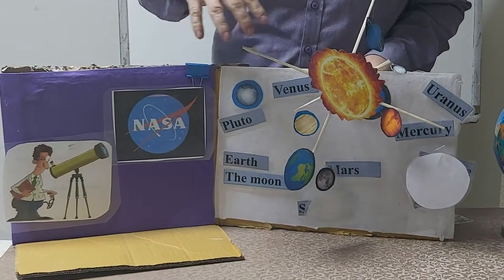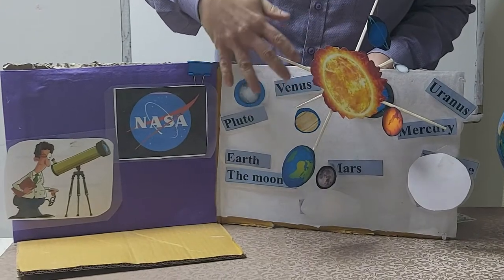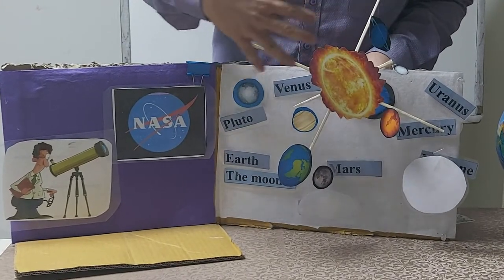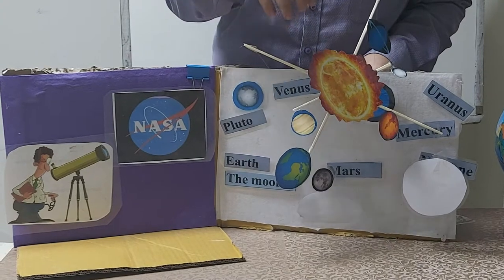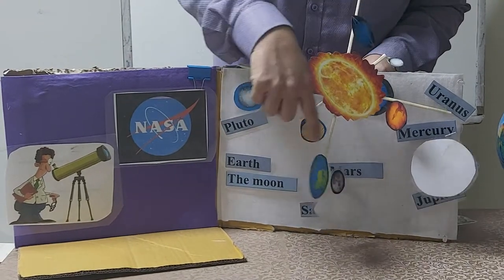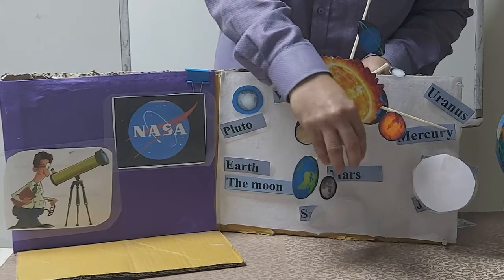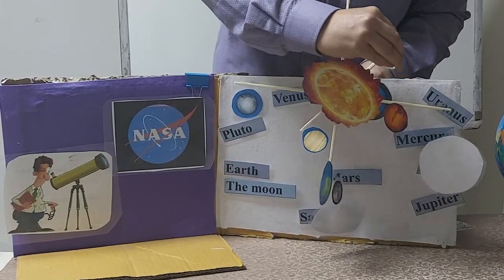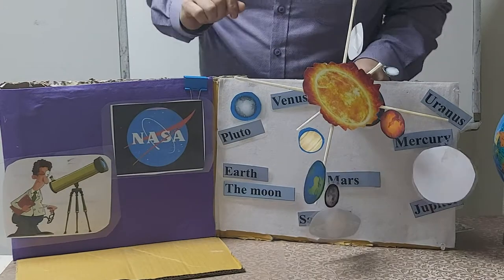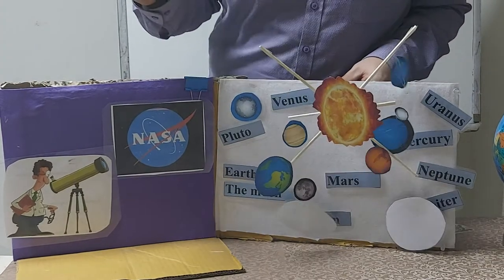He describes the solar system like a racetrack where all the planets are runners in their own lane. And while they are revolving, they seem like to catch up to each other.